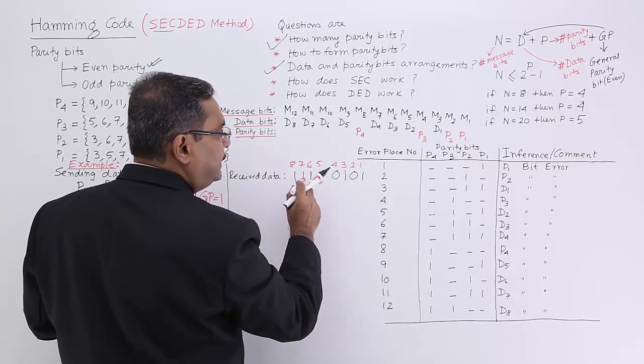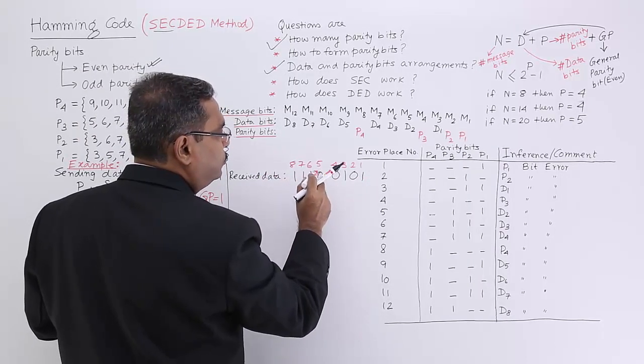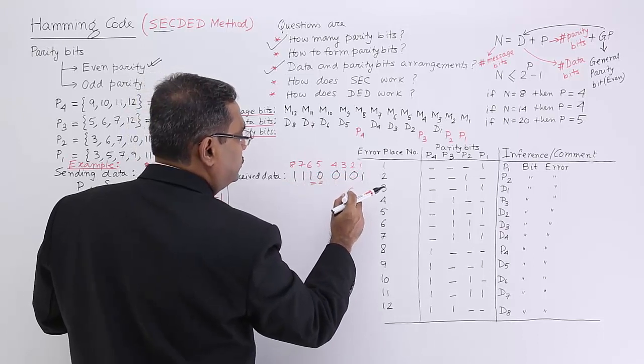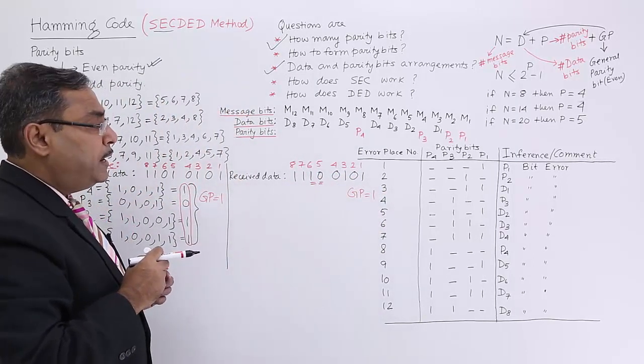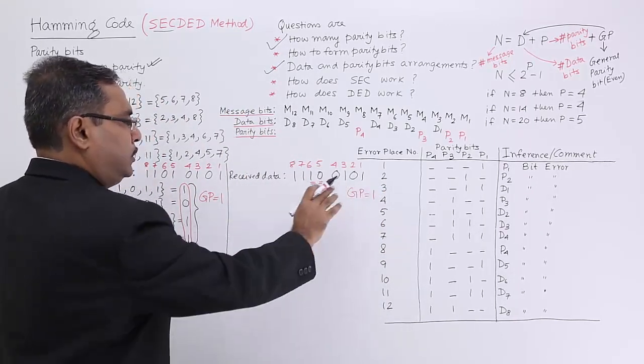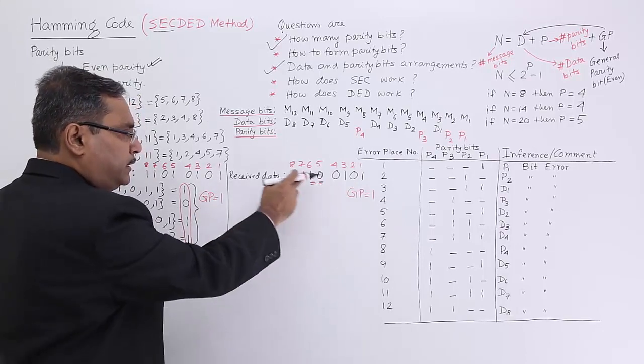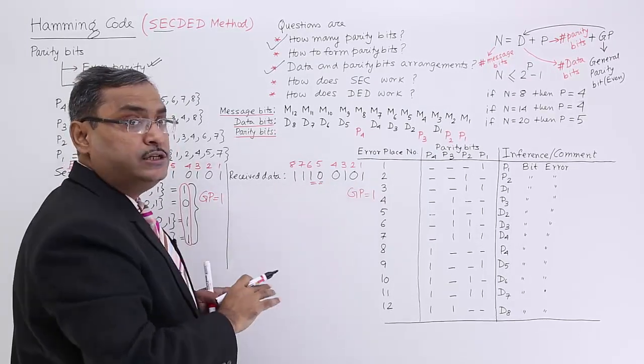Here you see we are having this particular data. The general parity bit will be 1, 2, 3, 4, 5. General parity bit will be 1 because I should make the number of ones even. Received parity bit, general parity bit, and the regenerated general parity bit will tell there is no error.